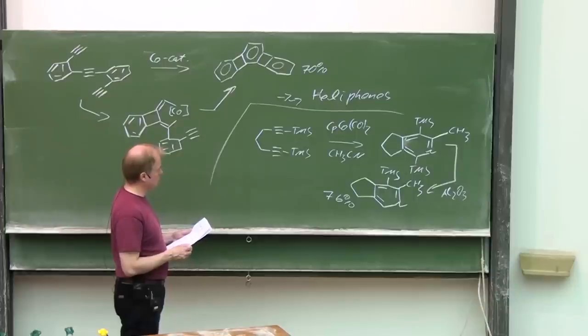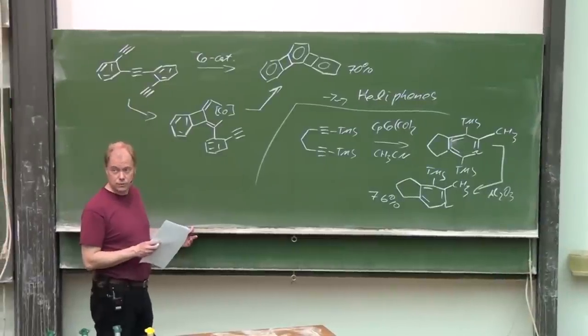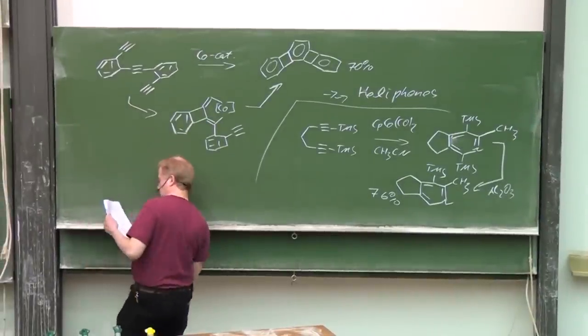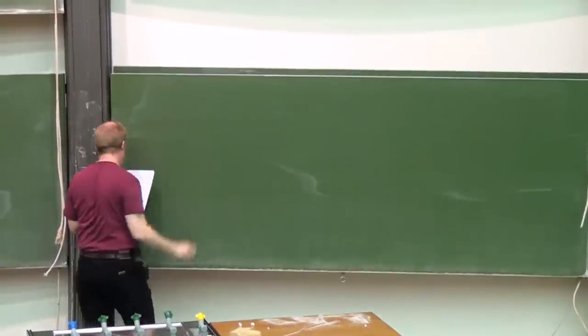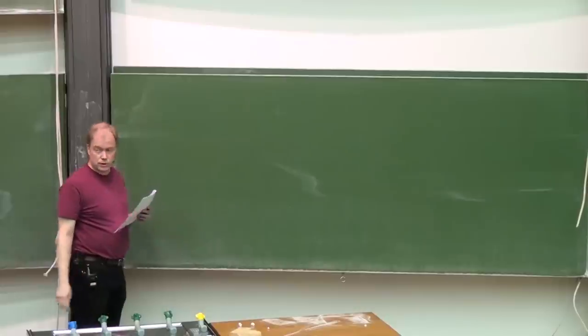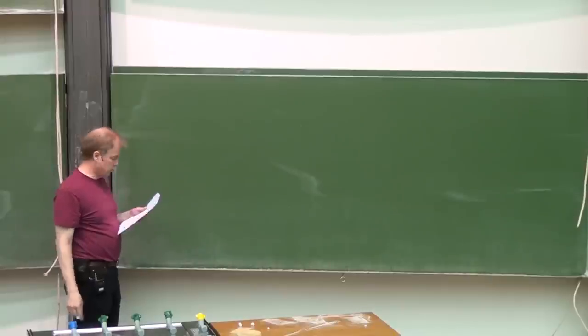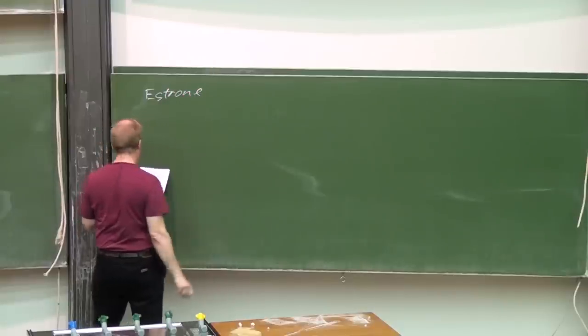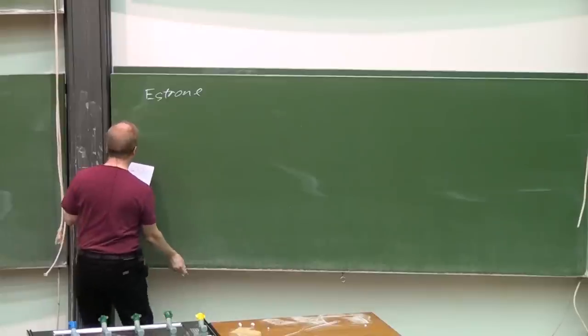Especially the Folhart group has applied also this type of process for natural product synthesis, the area of certain vitamins. But one rather famous natural product synthesis from the Folhart group we should discuss: the estrone synthesis, synthesis of racemic estrone.